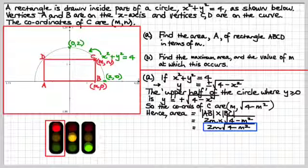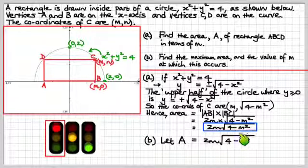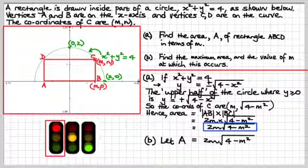Now we've got to do part B. Part B is where it gets a bit grisly, so fasten your seatbelts. We've got to find dA/dm and set it equal to 0, and then find the value of m which comes out of that. That's going to be a product rule. Did you spot that? 2 times something times some other function of m.